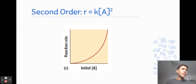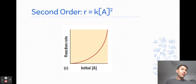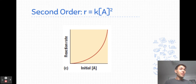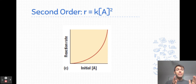A second order reaction looks different — we see a curve that is one half of a parabola, a y equals mx² relationship. This quadratic relationship tells us that if we double the concentration of A, the reaction rate goes up by a factor of 4. If we triple the concentration of A, the reaction rate goes up by a factor of 9. Comparing this to a first order reaction, small changes in concentration in a second order reaction have a much larger impact on the reaction rate.